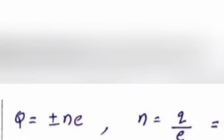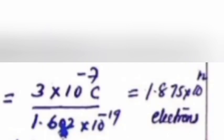Q is equal to plus or minus NE. N is equal to Q by E, equal to 3 into 10 raised to minus 7 coulomb divided by 1.602 into 10 raised to minus 19.